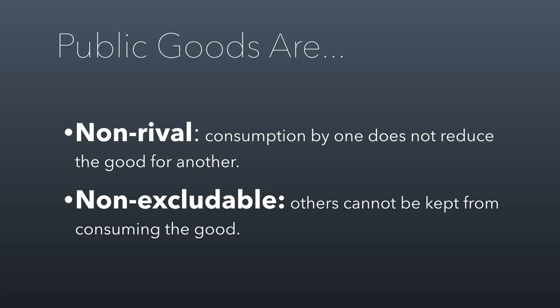If you've taken econ before, you're probably familiar with this idea of a public good. The idea of a public good is some sort of thing of value that people share publicly. The way we measure how public a good is uses two criteria. The first is that public goods are generally what are called non-rival, meaning that the consumption by one person of that good doesn't reduce the good for some other person. A good example of this is national defense — I don't consume national defense in a way that makes less of it available to anybody else. The point is I can't use it up in a way that makes meaningfully less for anybody else.